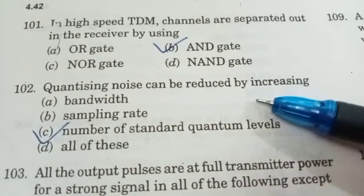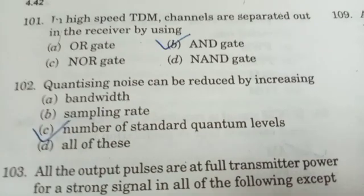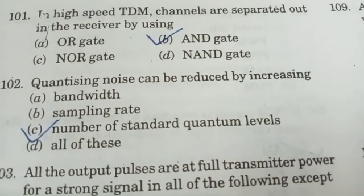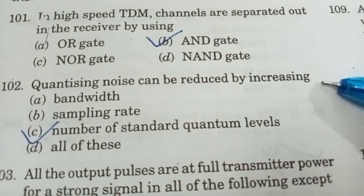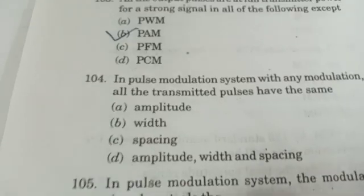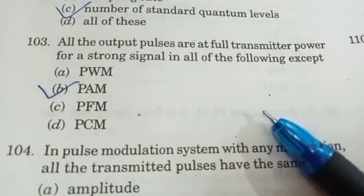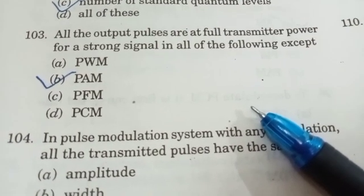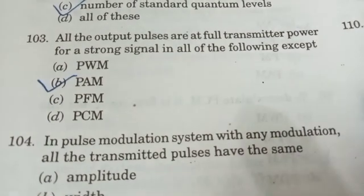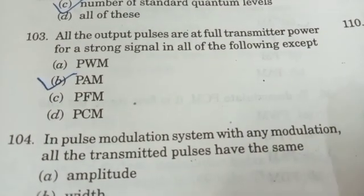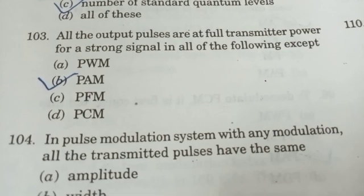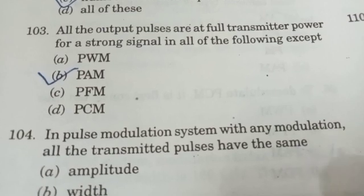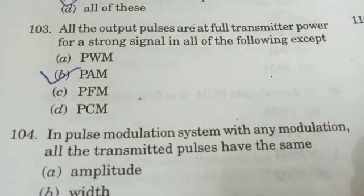Quantizing noise can be reduced by increasing the number of standard quantum levels. All the output pulses are at full transmitter power for a strong signal in all of the following except PAM — pulse amplitude modulation.